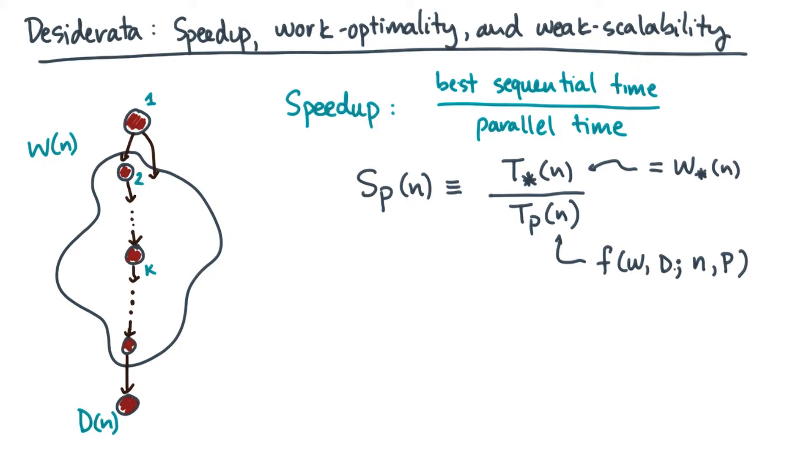Now, if I give you a PRAM with p processors, then ideally you'd like the parallel algorithm to be p times faster than the best sequential algorithm. This condition is called ideal speedup, or sometimes linear speedup, linear scaling, or ideal scaling. But basically, they all say you want the speedup to be linear in p.